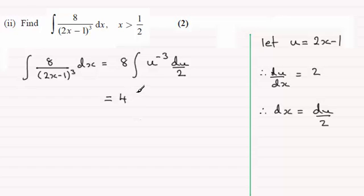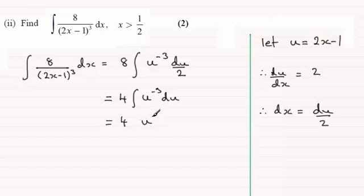So we have 4 times the integral of u to the minus 3 with respect to u. Integrating u to the minus 3 gives u to the power minus 2 divided by minus 2, plus the constant of integration c. 4 divided by minus 2 gives minus 2.